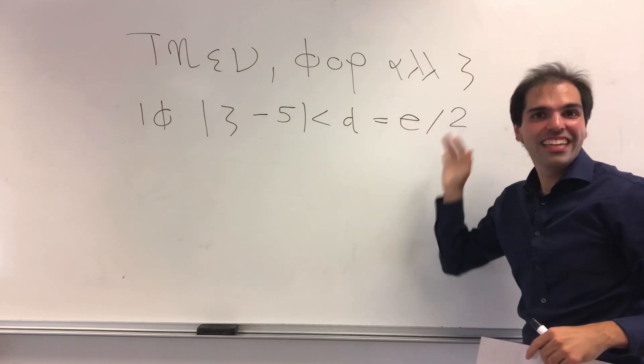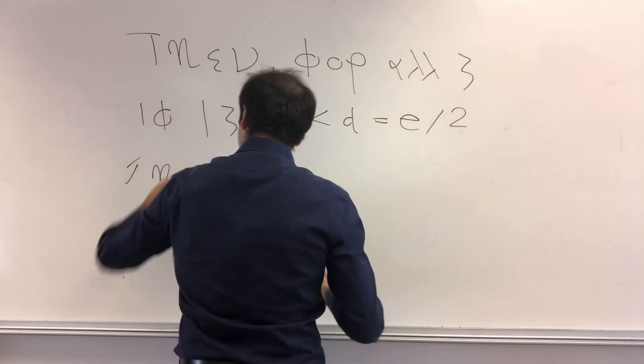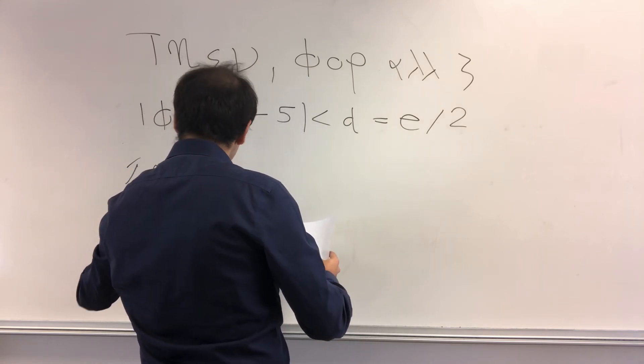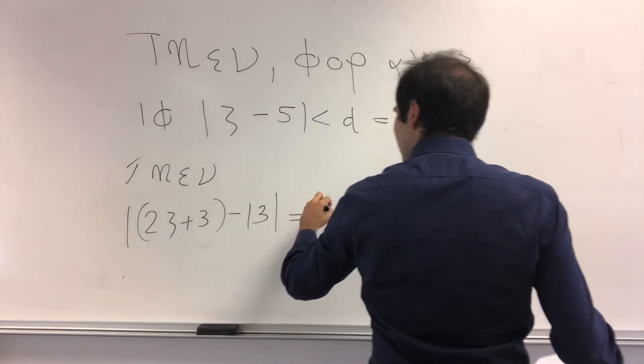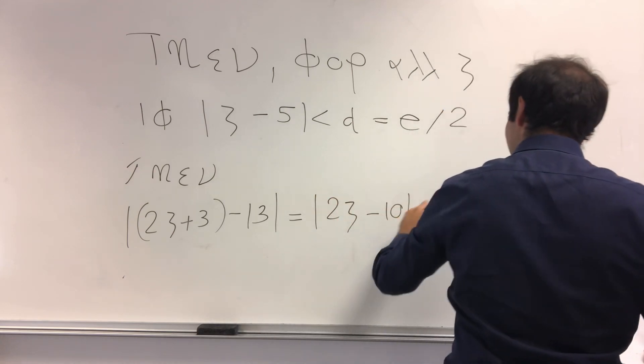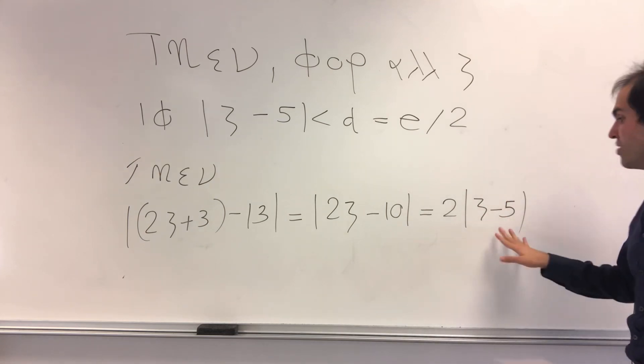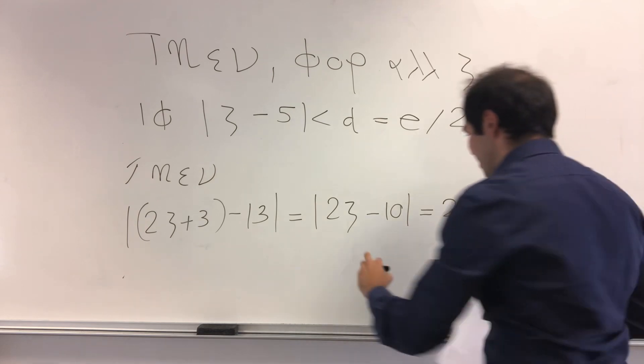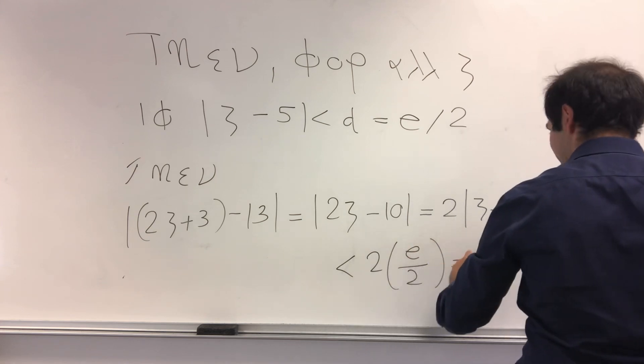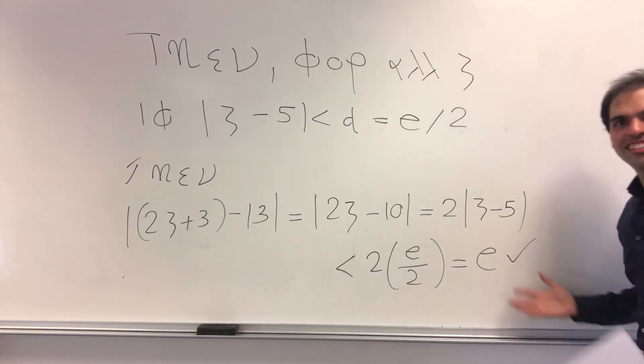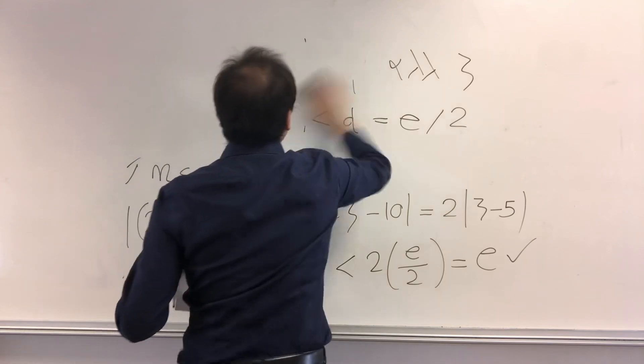Okay, then let's calculate the difference. So 2x plus 3 minus 13, well that's 2x minus 10, which is 2 times x minus 5. But remember, we chose x minus 5 to be less than delta, so this is less than 2 times epsilon over 2, which is epsilon. So I guess in Greece when you see e you're very happy.